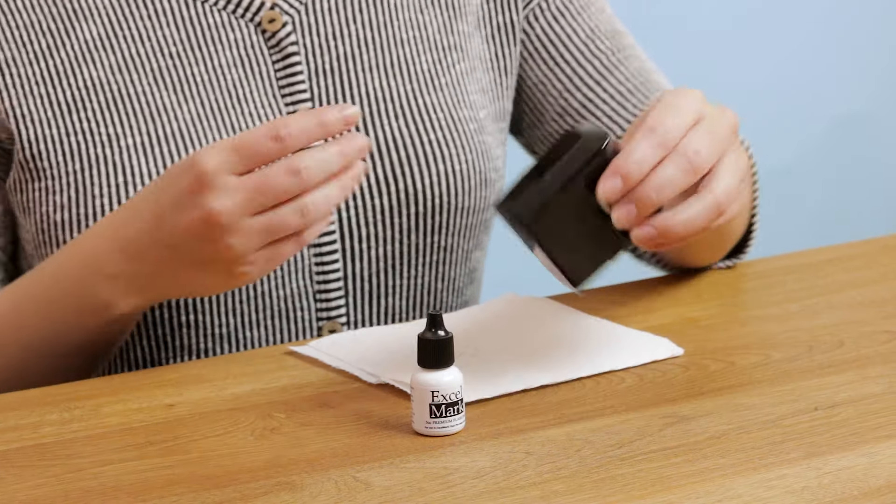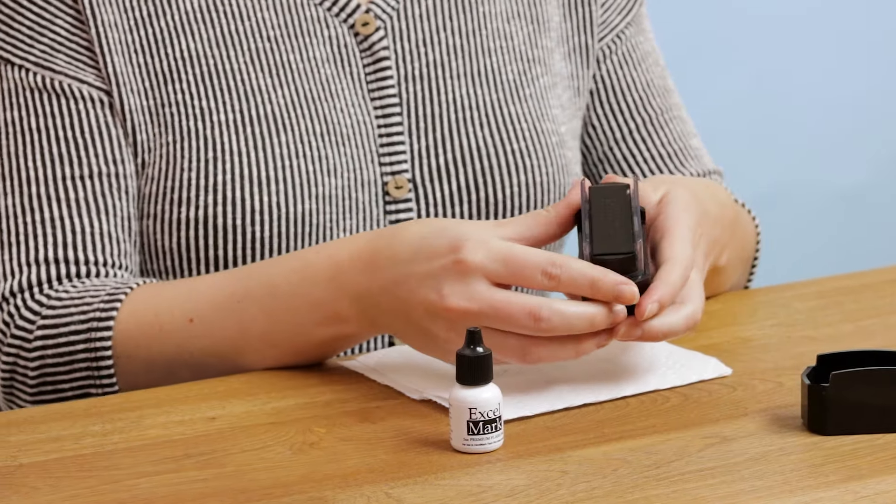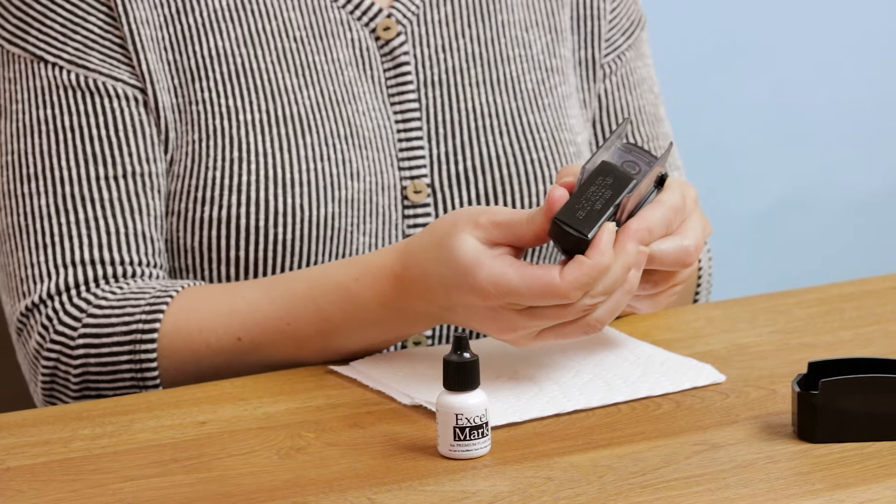If your pre-ink stamp has a sliding ink cartridge, simply take off the bottom cap and then slide the cartridge out.